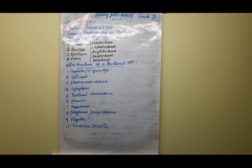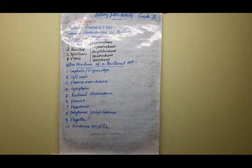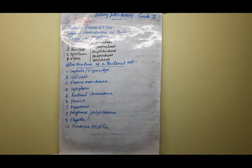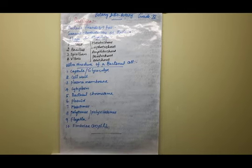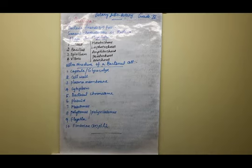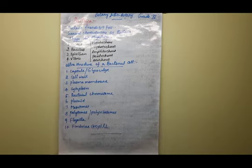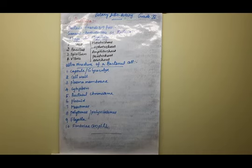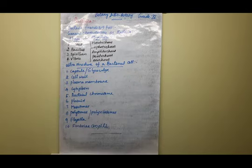Next general characteristic feature is asexual reproduction. Asexual reproduction takes place in two methods — one is binary fission and another one is endospore formation. I will ask those questions again later, so don't forget — what are the asexual methods of reproduction? Binary fission and endospore formation.